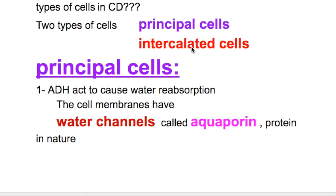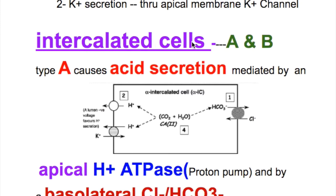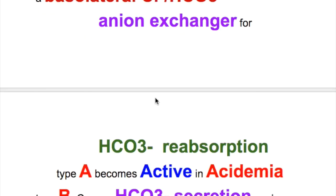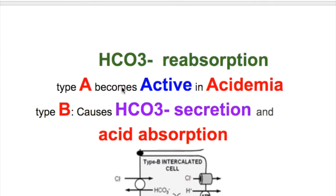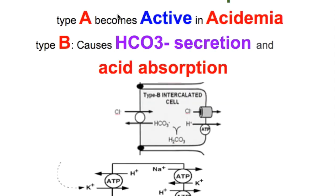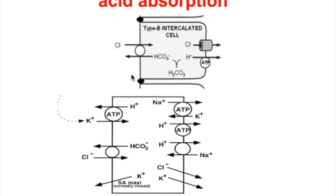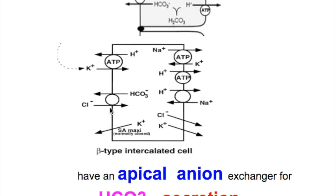Intercalated cells are of type A and type B. Type A cells cause acid secretion, mediated by an apical hydrogen ATPase (proton pump) and by a basolateral chloride-bicarbonate ion exchanger for bicarbonate reabsorption. Type A cells become active in acidemia.